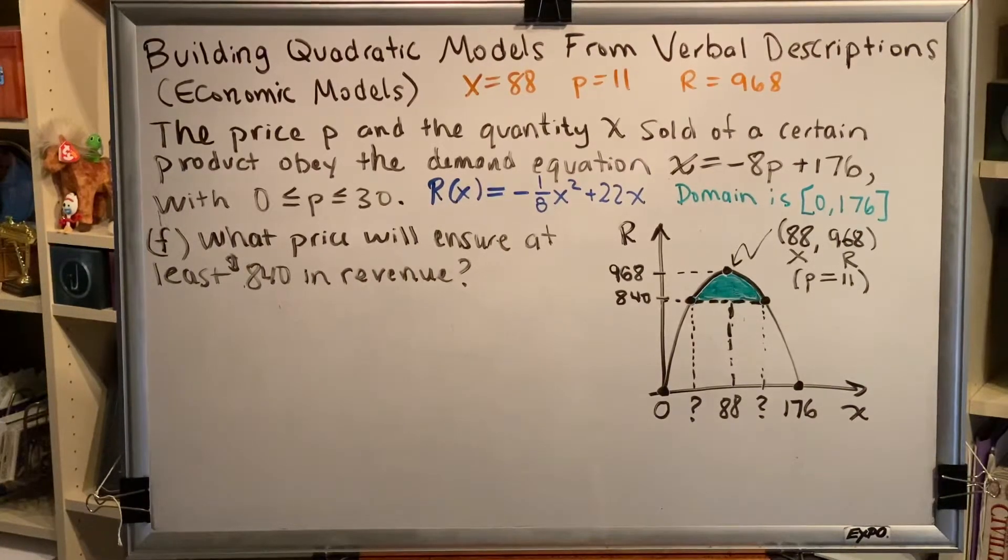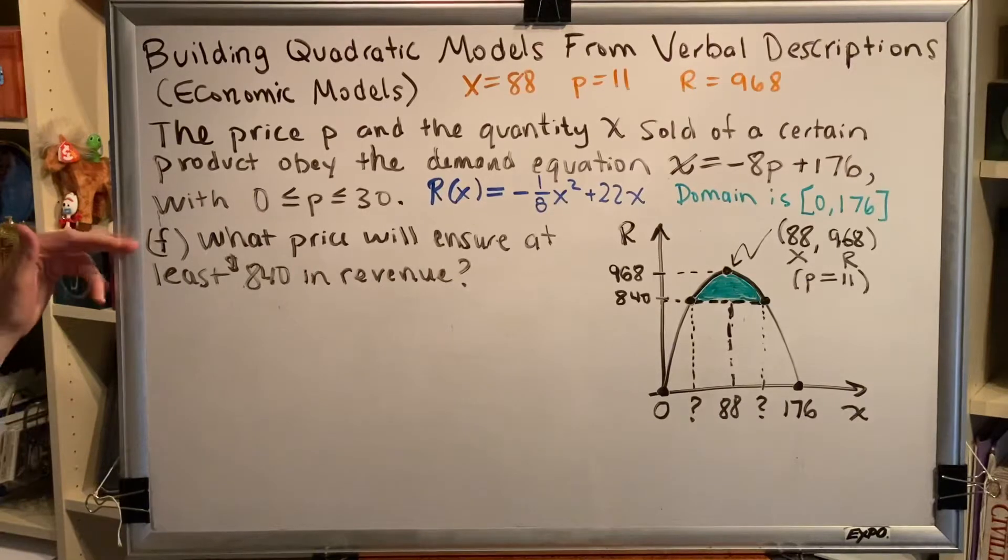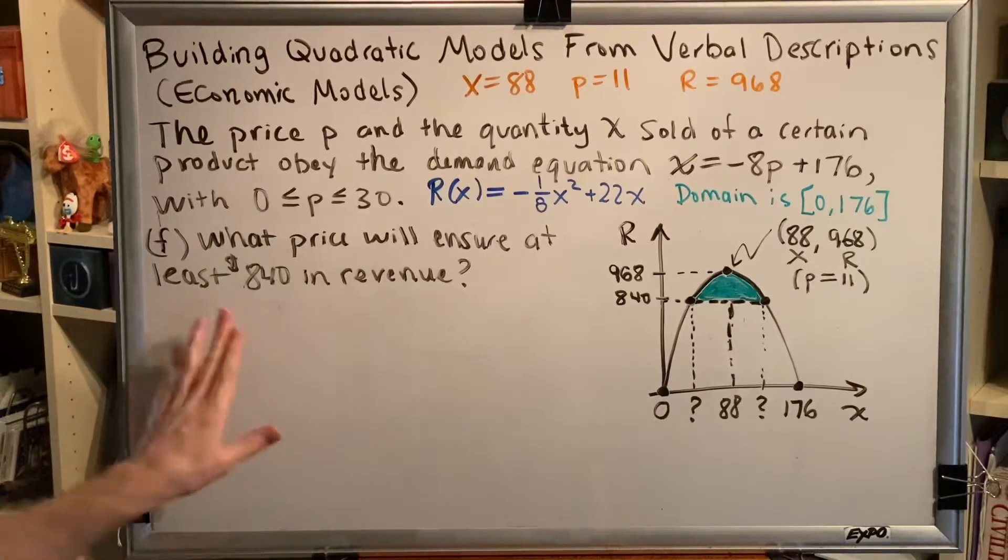The topic of this video is building quadratic models from verbal descriptions, economic models. This is a continuation from the previous video. We're now up to part F of the same problem. What price will ensure at least $840 in revenue?